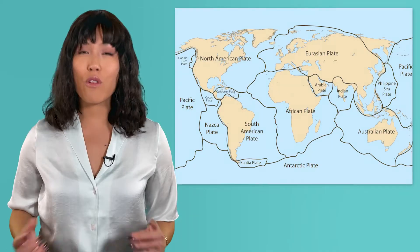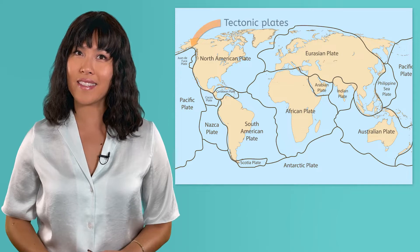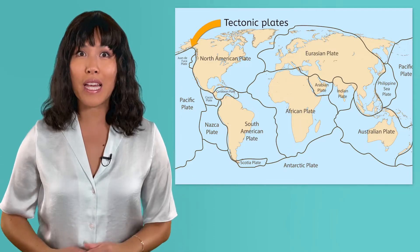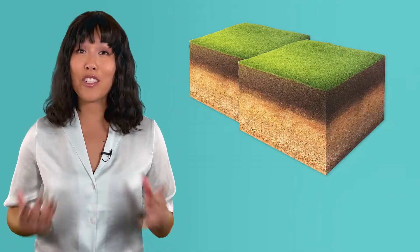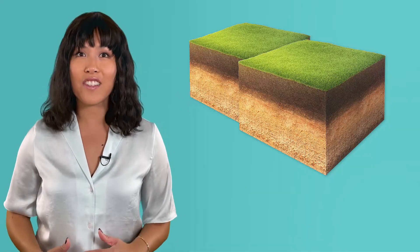So, what set off the tremors we just felt, and why do so many happen here? Remember, the Earth's crust is made of huge, slow-moving tectonic plates. The Aleutian subduction zone is one of Earth's many plate boundaries where these tectonic plates meet.